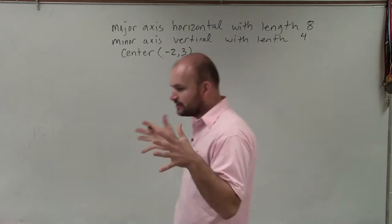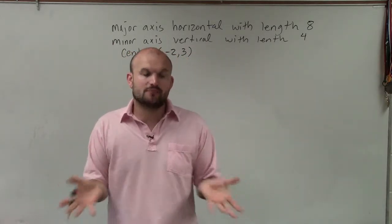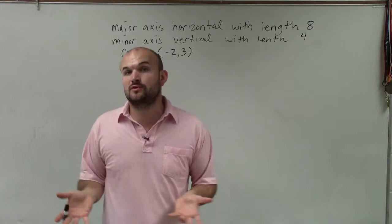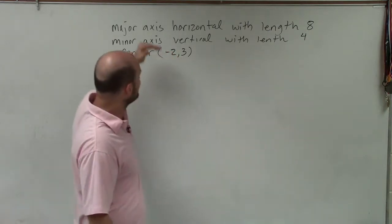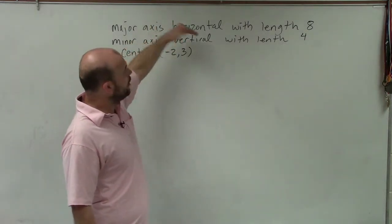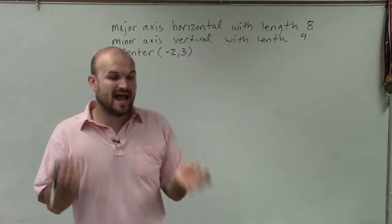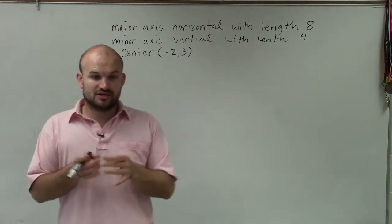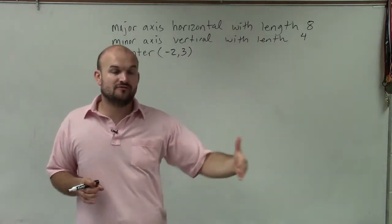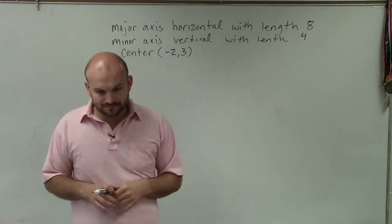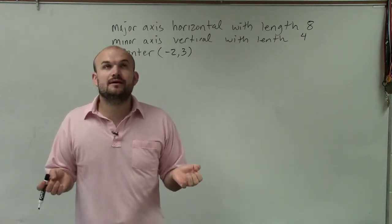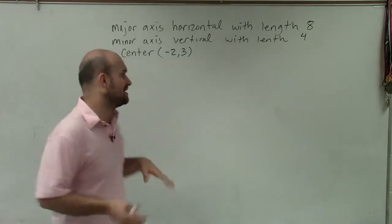So when we're writing an equation of an ellipse, there's two different equations, one where the major axis is horizontal and one where the major axis is vertical. And thankfully, in this problem, they say that it is horizontal. So therefore, we know that a squared, which a represents the distance from the center to the vertices, is going to be under the x, since it's horizontal.